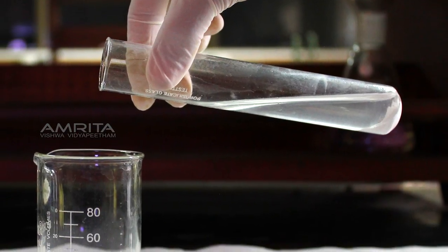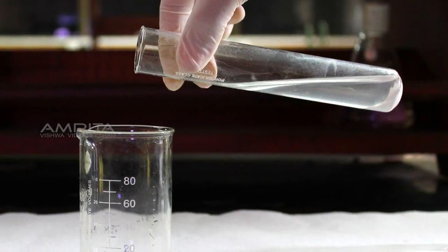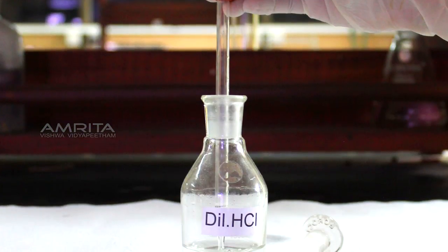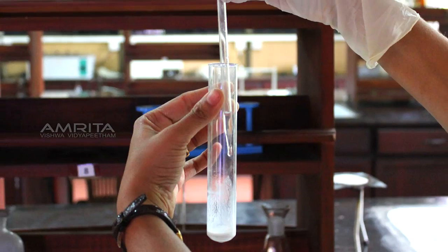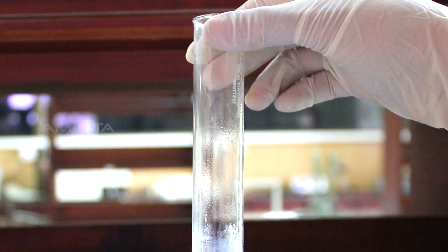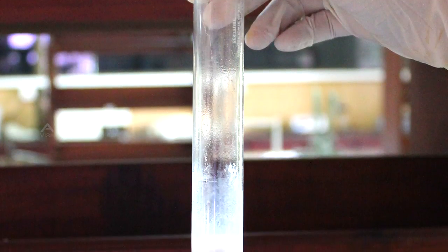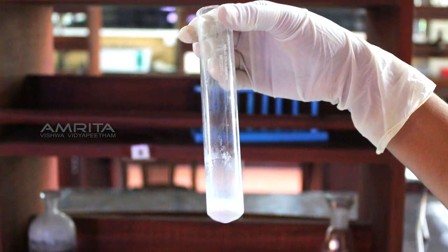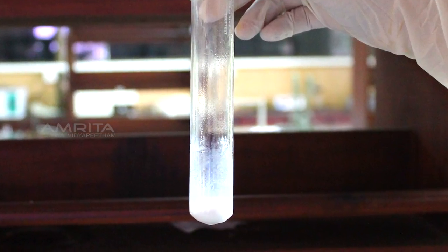Decant the upper solution in the boiling tube into the beaker. Add a few drops of dilute HCl to the white precipitate of barium sulphate and shake the test tube well. You can observe that the white precipitate remains insoluble in the dilute HCl.